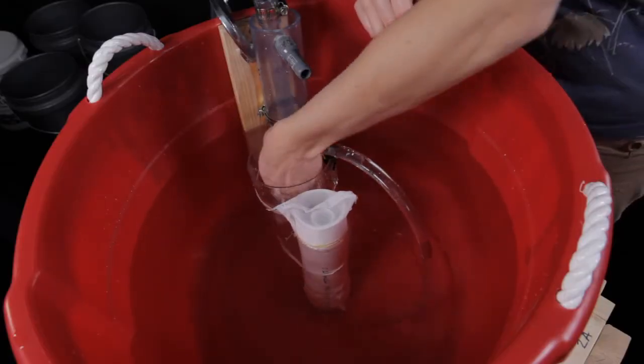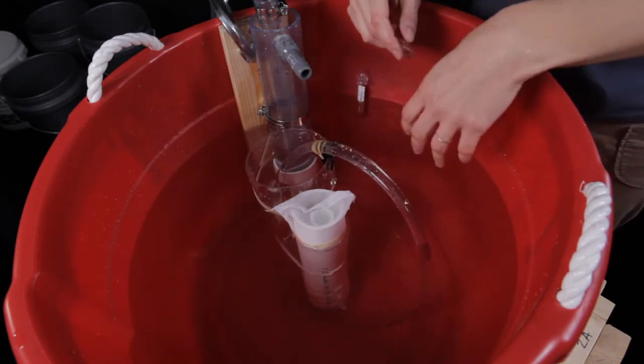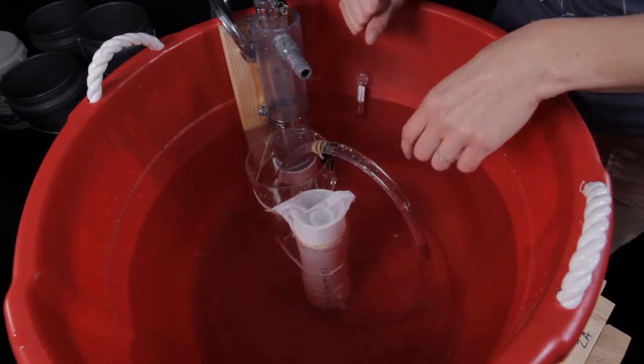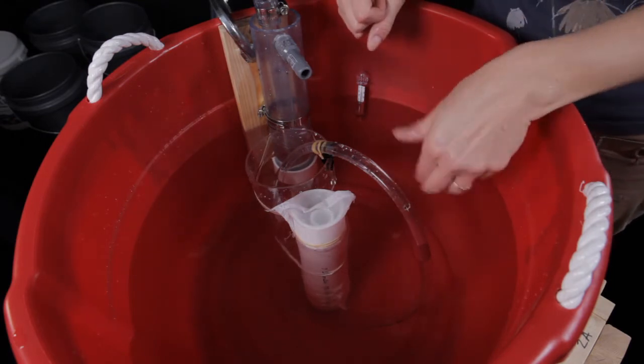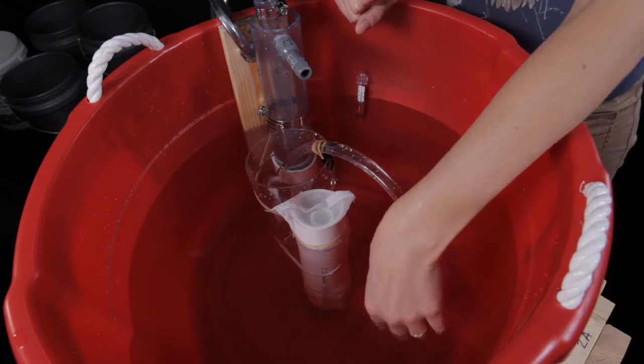And you also want to make sure that that filtered end is about one-third of the way up that container so that it's not touching the bottom, because you want to make sure it can suck the water in and also that it doesn't bother the eggs or the fry too much.